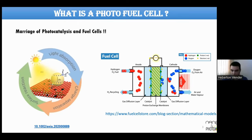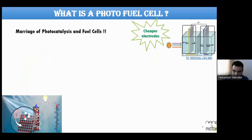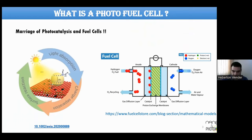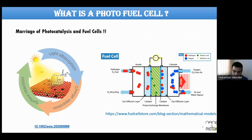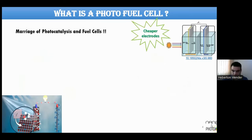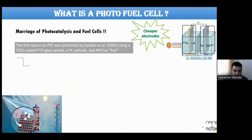If we combine these two technologies, we get photocatalytic fuel cells. The main advantage is cheaper electrodes — conventional fuel cells typically use noble metals, so replacing them with semiconductors can lower the device cost. The first report of a photocatalytic fuel cell dates back to 2005, using a titanium dioxide-coated FTO glass anode and a platinum cathode with ammonia as fuel. Ammonia was oxidized, oxygen was reduced, and the device produced power.